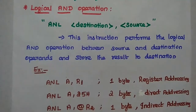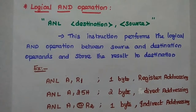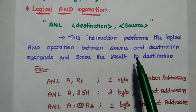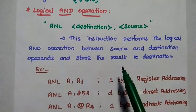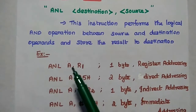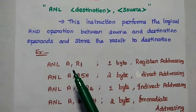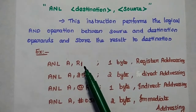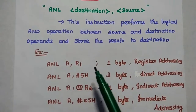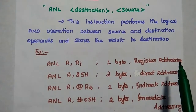The first instruction is the logical AND instruction, represented as ANL destination, source. This instruction performs the logical AND operation between the source and destination, and the result will be stored in the destination itself. For example, ANL A, R1 means we perform a logical AND between the contents of R1 and A, and the result is stored in A. It is a 1-byte instruction using register addressing mode.